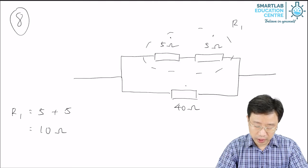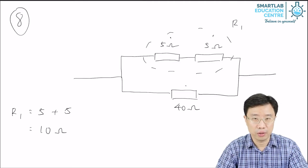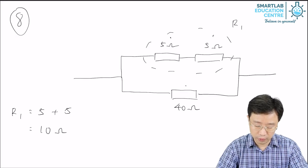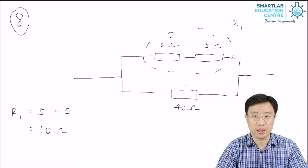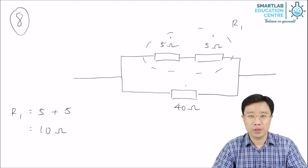So the effective resistance of the two 5-ohm resistors in series is 10 ohms, and this is in parallel with the 40-ohm resistor. So now let's calculate the effective resistance of this arrangement.